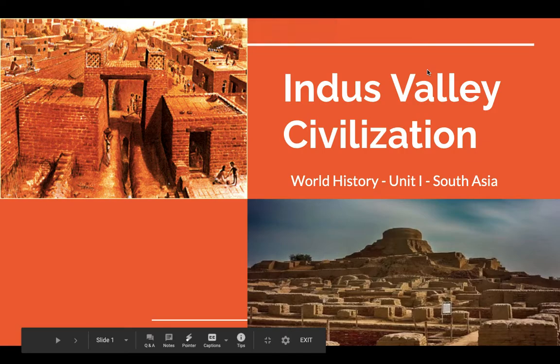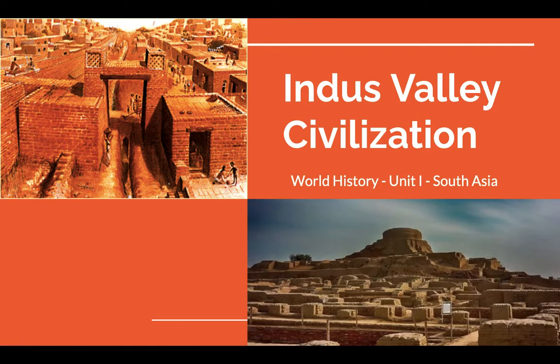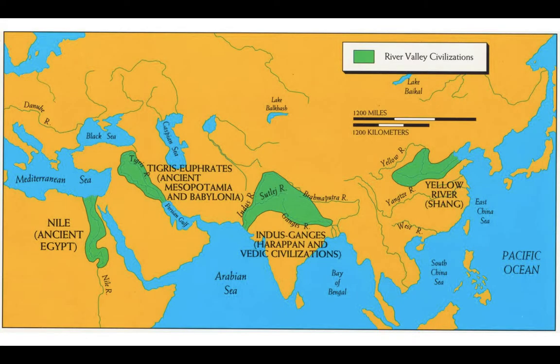This first screencast overview will be on the Indus Valley Civilization. This is the first of the major human civilizations we're going to be exploring in world history in our Unit 1 on South Asia. The Indus Valley is located right in the center of your screen — it's the Indus River, and it spreads out through what would be modern-day Pakistan and northern India. It's along this river valley that civilization first emerges in South Asia.